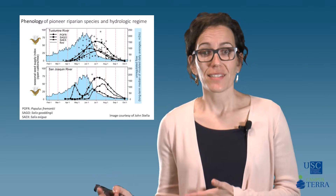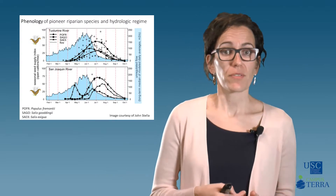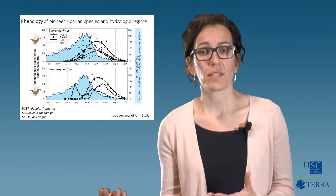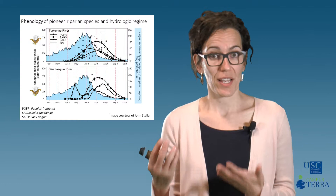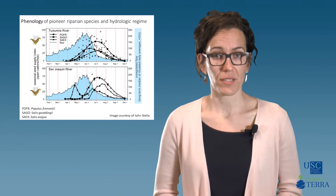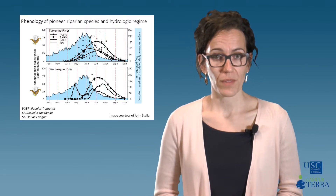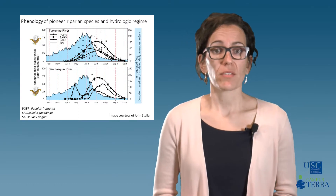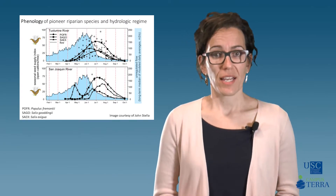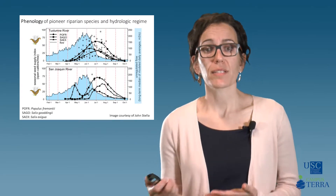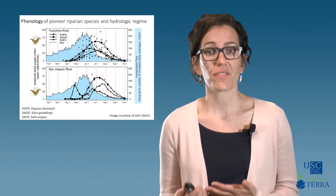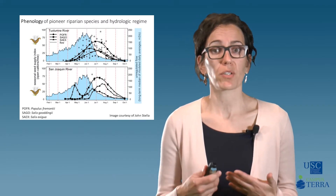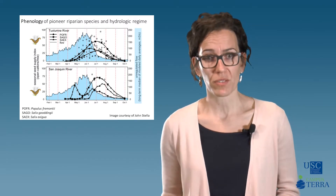Releasing seeds after the peak flows enables them to fall on fresh sediment deposits which have been created by previous floods. Given that seedling recruitment is dependent on floods and the availability of open seed beds, this life stage is a major demographic bottleneck for riparian species.